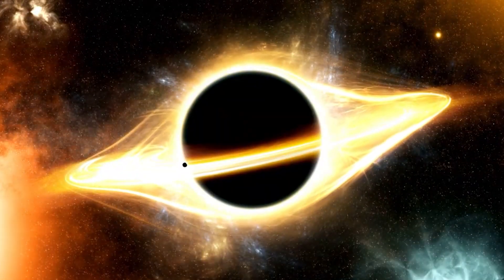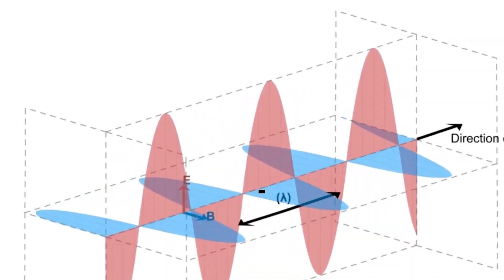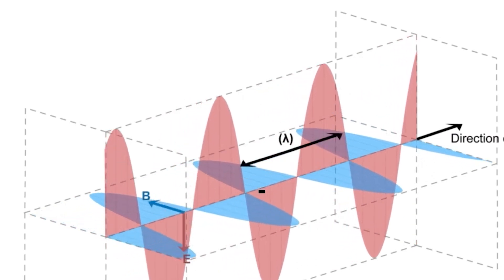Betelgeuse's proximity gives scientists a unique opportunity to probe processes like convection, pulsation, and mass loss in ways impossible with more distant targets.